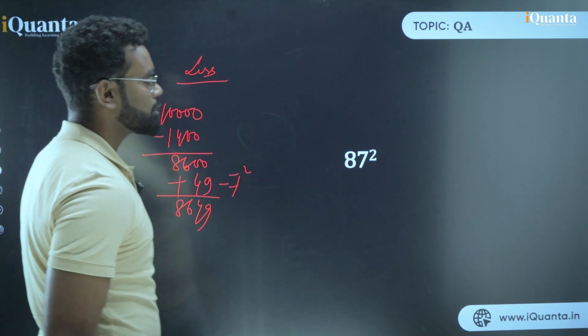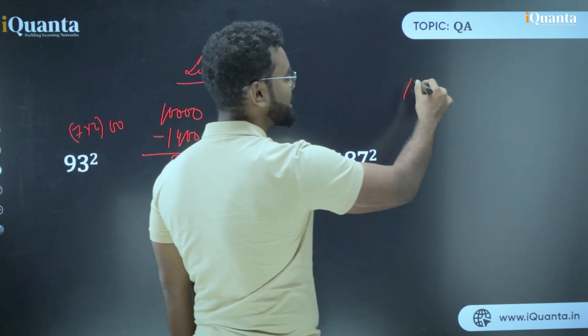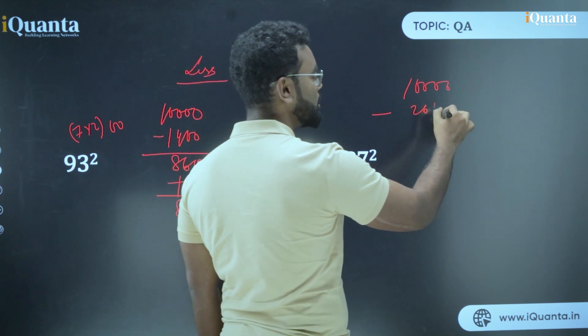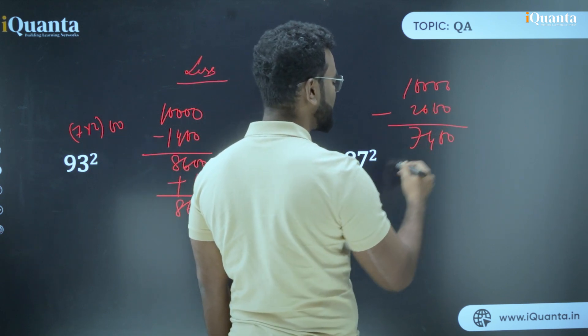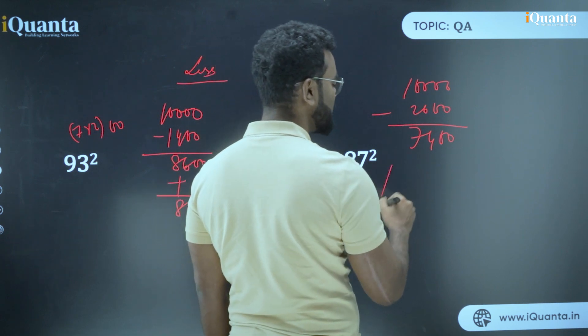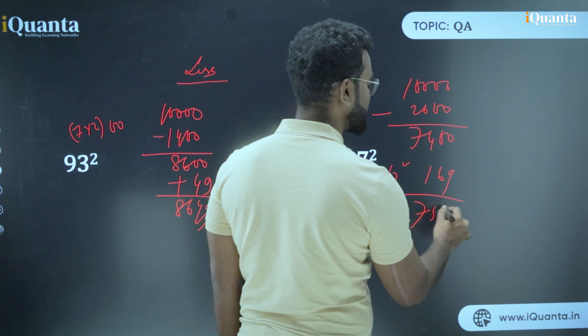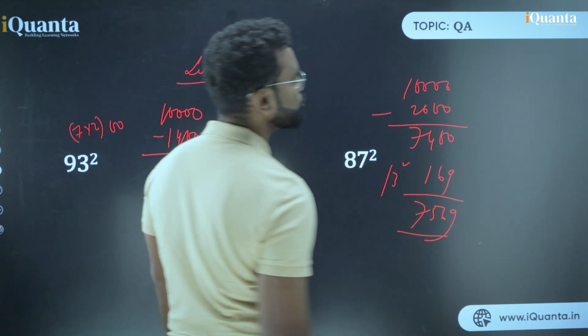Now in case of 87 square, the same thing we will do. That is 10,000 minus how much? 13 double, that is 2600. So your answer is 7400. 7400 plus 13 square. What is 13 square? 13 square is nothing but 169. So your answer is 7569. So I hope I have made you understood how we are solving this type of questions, this kind of squares.